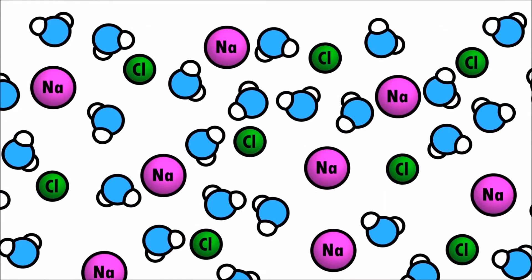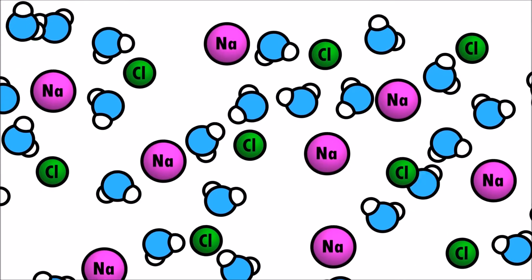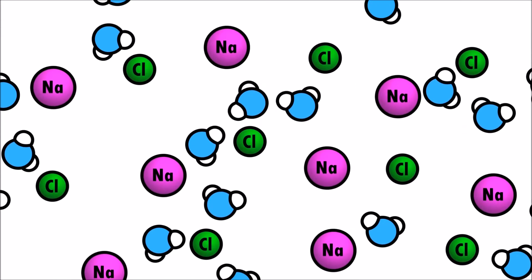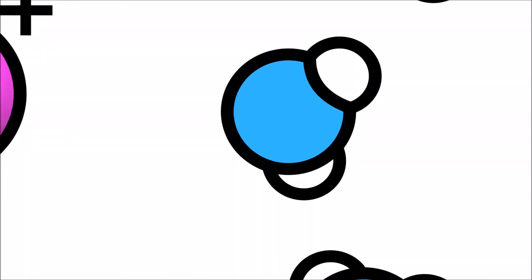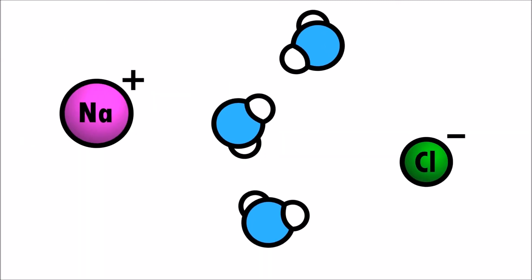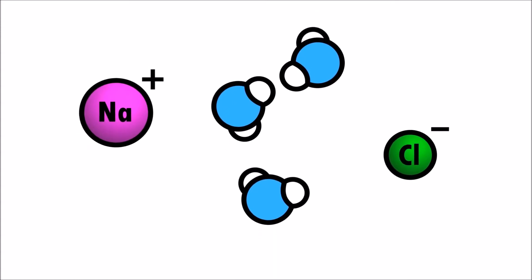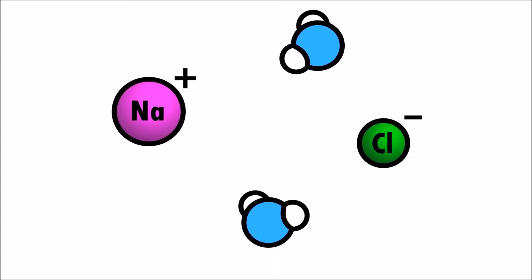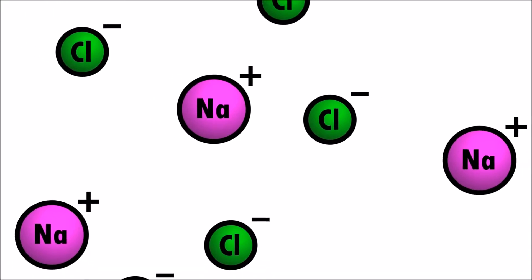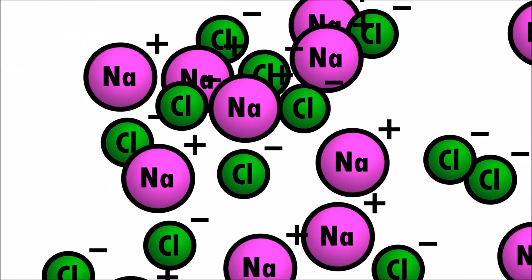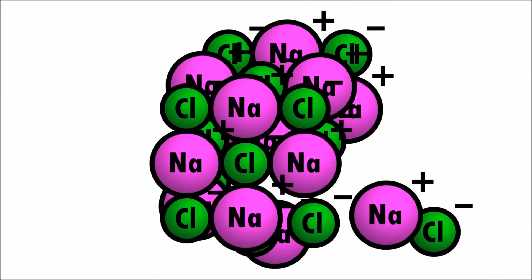But the water molecules eventually evaporate. Sodium molecules have a positive charge. Chlorine molecules have a negative charge. Positive and negative charges are attracted to each other. And when the water molecules are no longer there to separate the sodium and chlorine molecules, they join together and form tiny cube-shaped crystals.